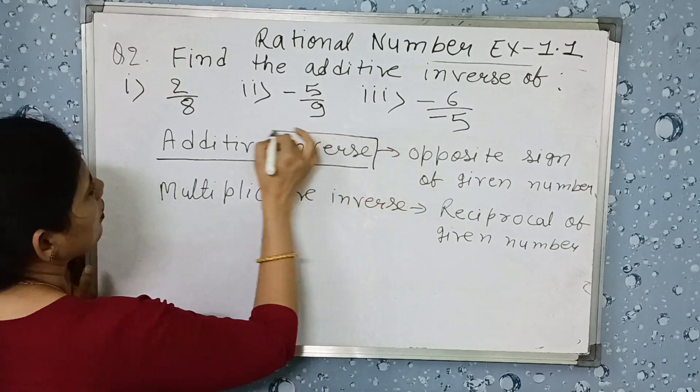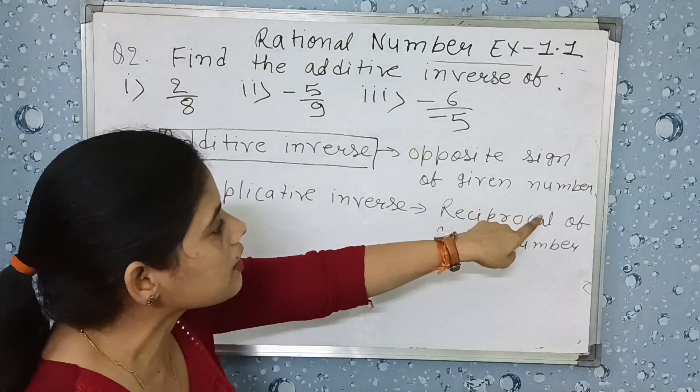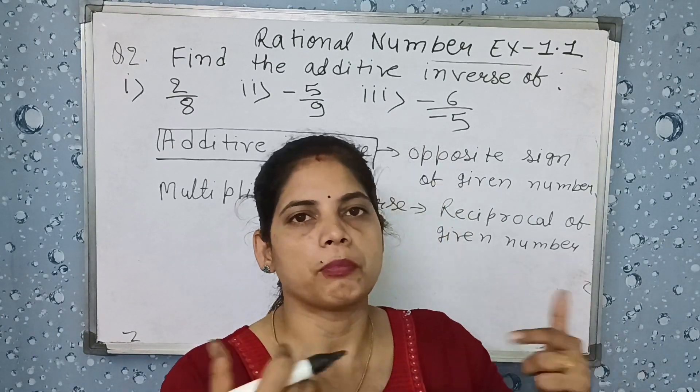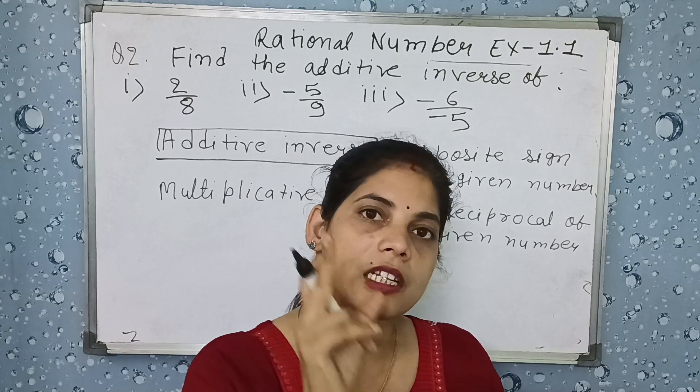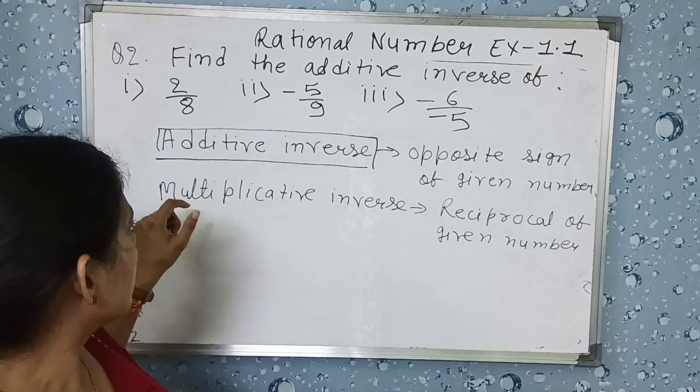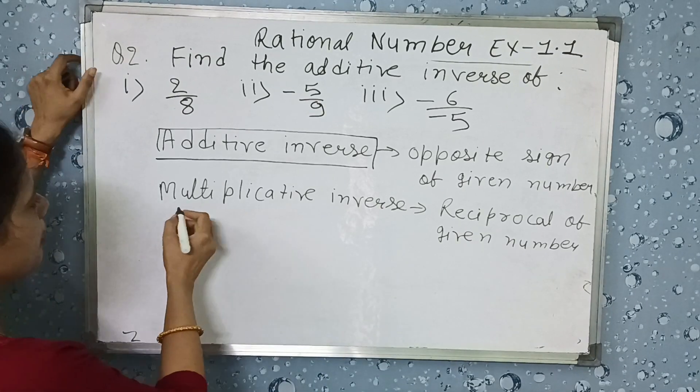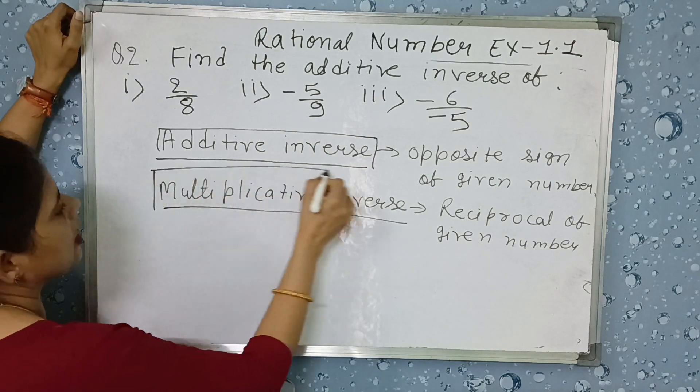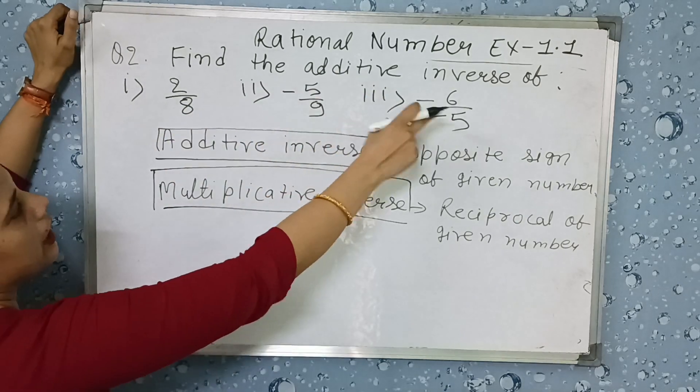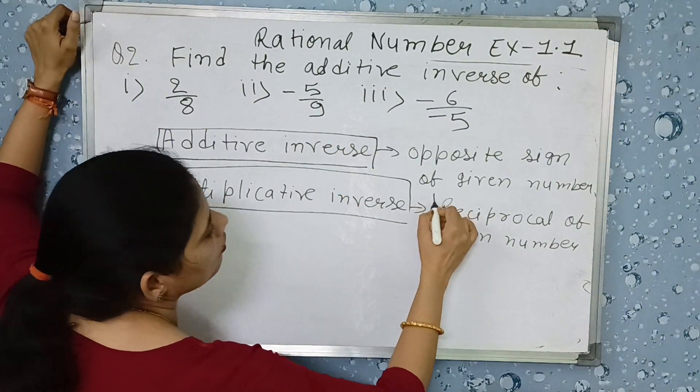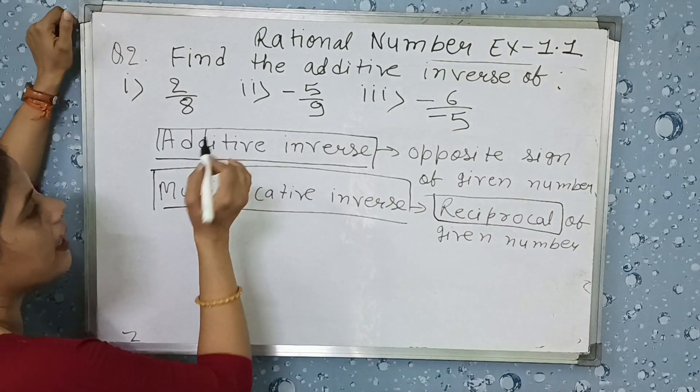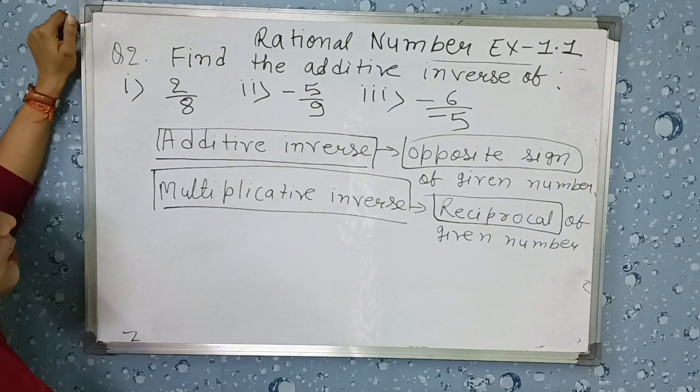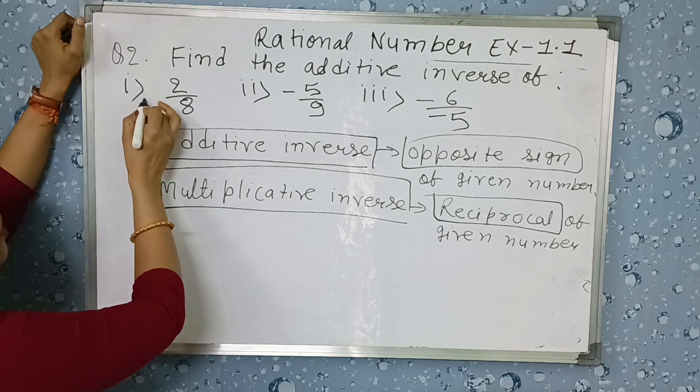First of all, what is the additive inverse? Additive inverse means opposite sign of given number. If there is negative number, it will be positive. If there is positive number, it will be negative. The number will not change, only the sign changes. In the next coming questions you will also face multiplicative inverse. Multiplicative inverse means reciprocal and additive means opposite signs of number.